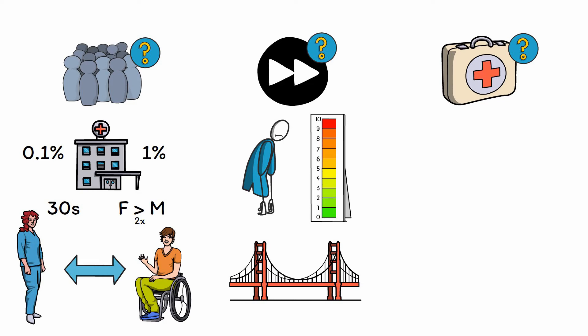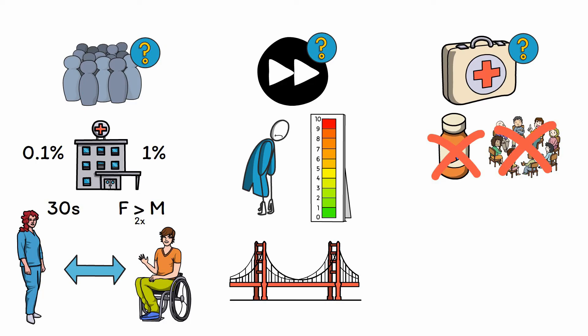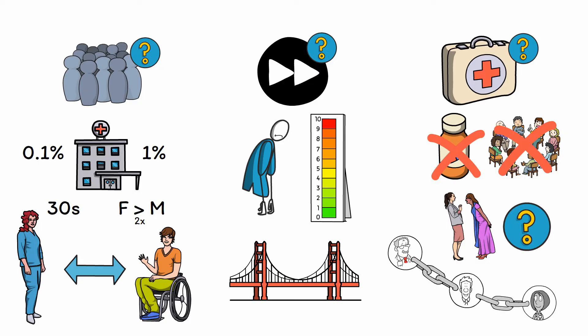Treatment for factitious disorder is difficult, as neither medications nor psychotherapy have been shown to be effective. In addition, it is unclear whether confronting the patient about factitious behavior is helpful or harmful, as studies have shown no difference between confrontational and non-confrontational approaches. Nevertheless, it seems reasonable to try and work with patients from the perspective of trying to create a safe and therapeutic alliance, while acknowledging that allowing the patient to continue in these patterns is likely to result in harm.